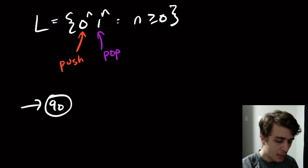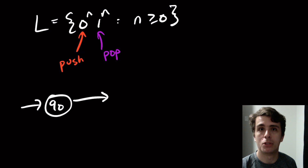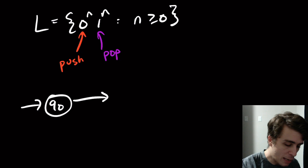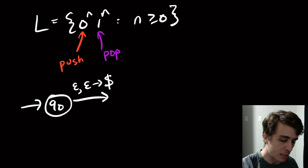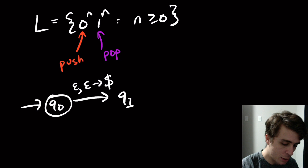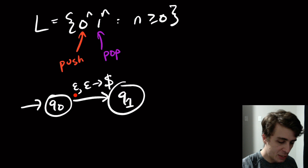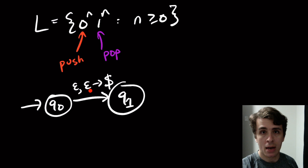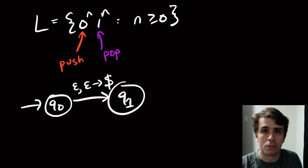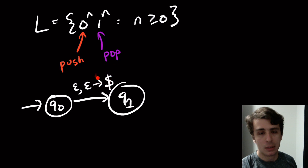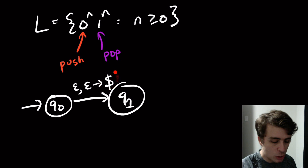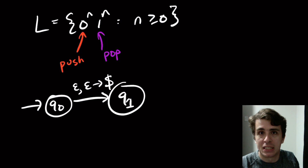A common technique — not required, but a good one — is to put a dummy character onto the stack. We have a transition that reads nothing and pops nothing (because the stack is empty, we can't pop from it), and we push on some random character. This is called the bottom-of-stack character, often written as a dollar sign, though it doesn't matter which character it is.